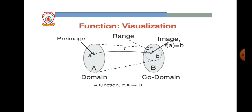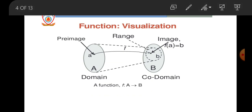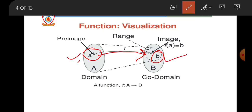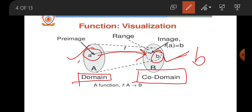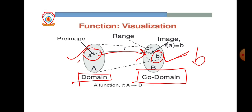In the elliptical form, set A and set B are shown. The first element of set A is called the pre-image, and the element of set B to which it is mapped is called the image. A is the pre-image and B is the image. The elements of set B are called the range. Set A is called the domain and set B is called the co-domain. These are the key terms: pre-image, image, domain, co-domain, and range.